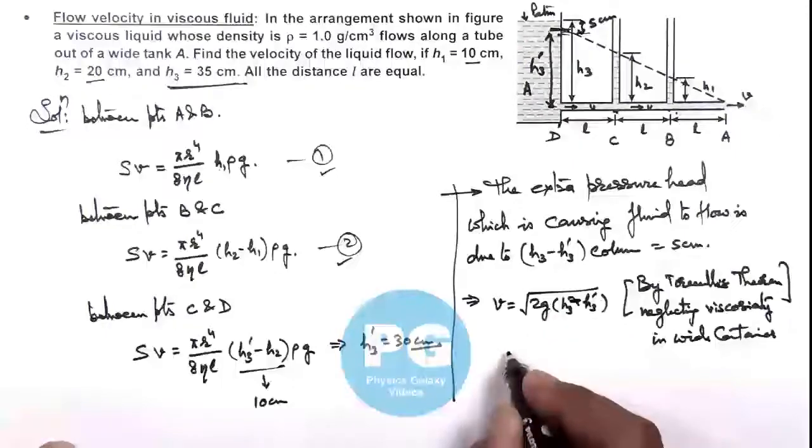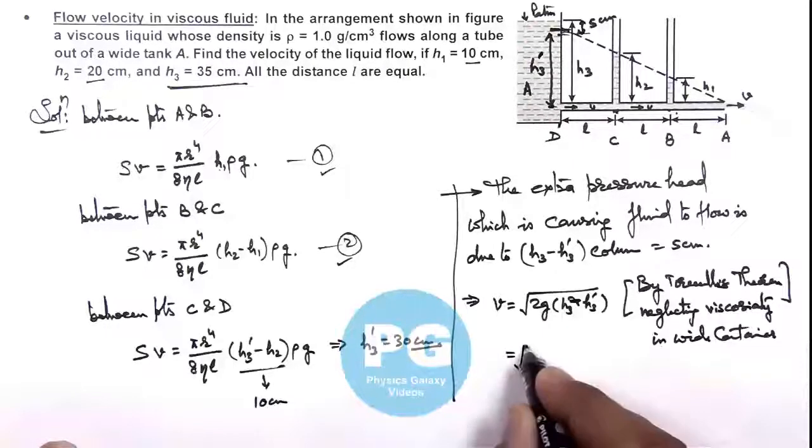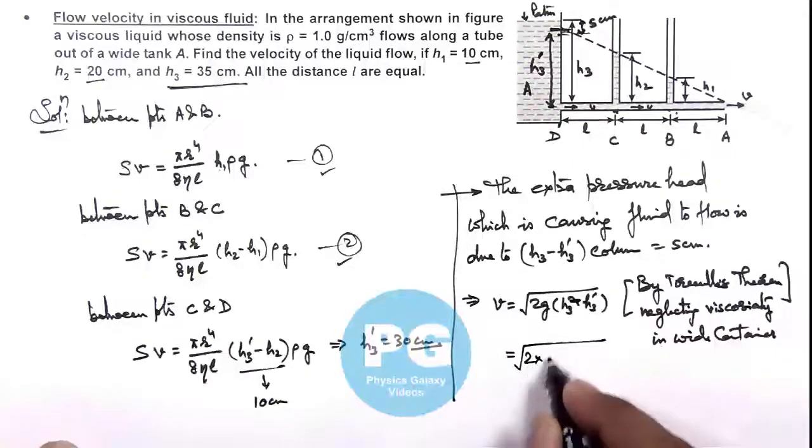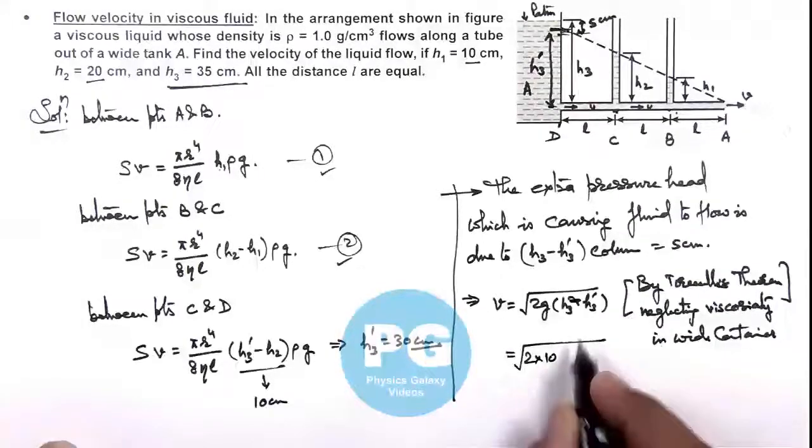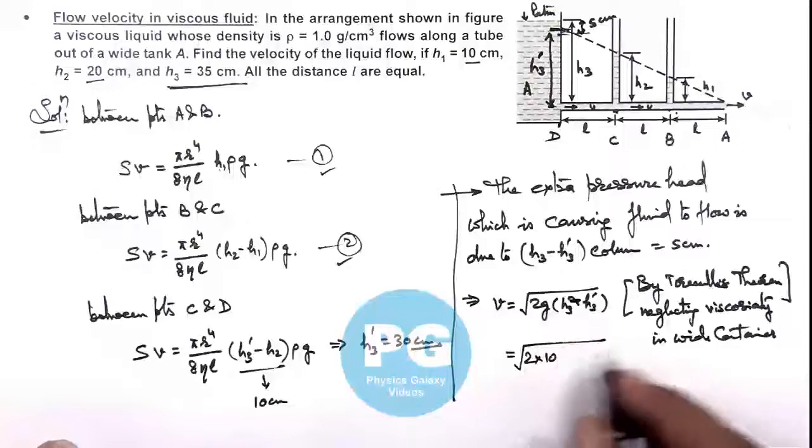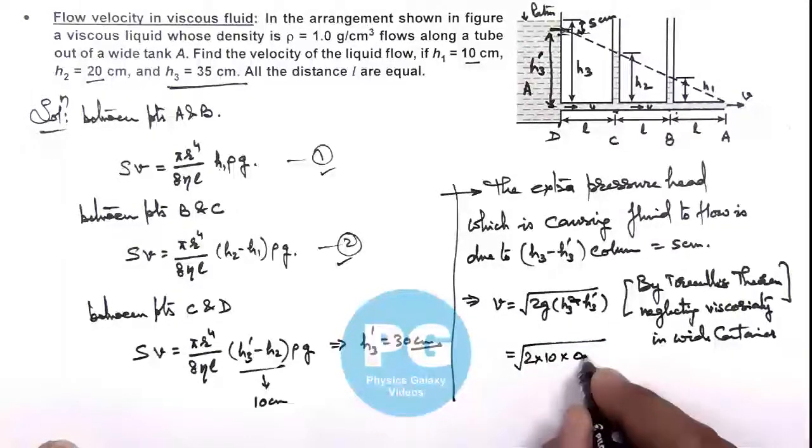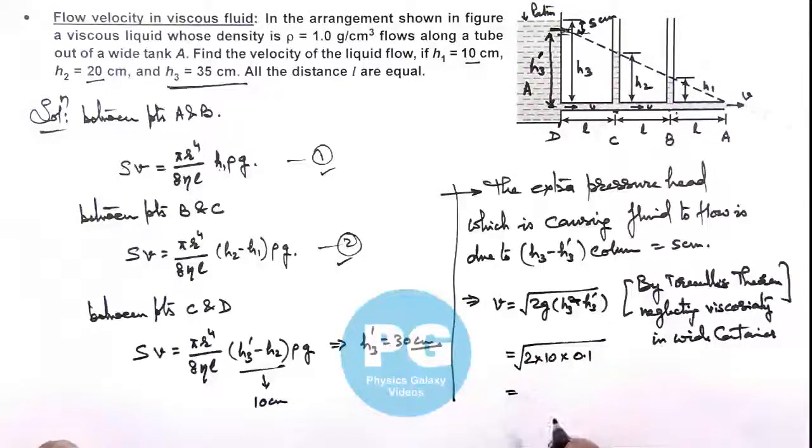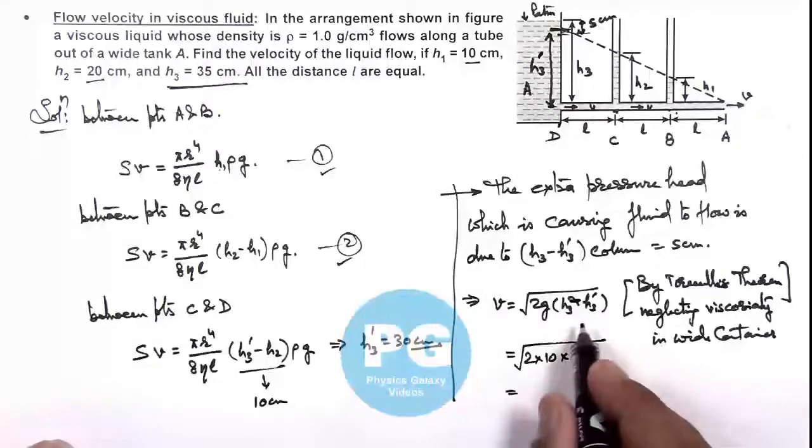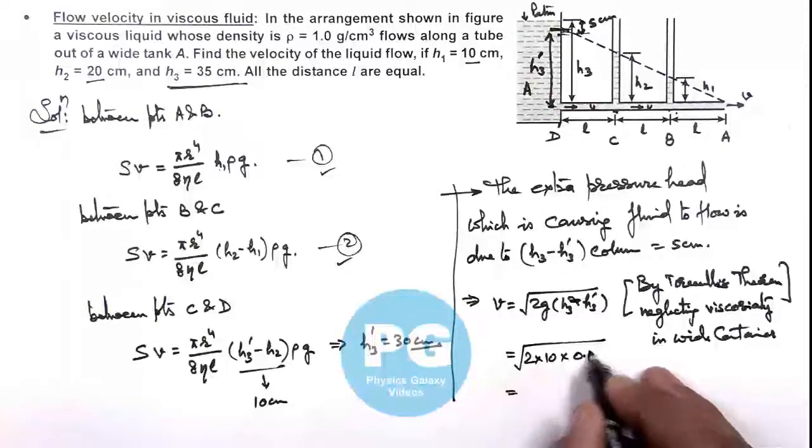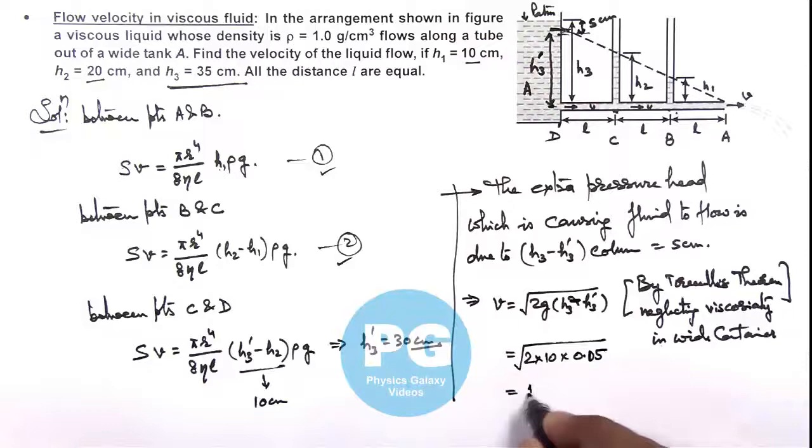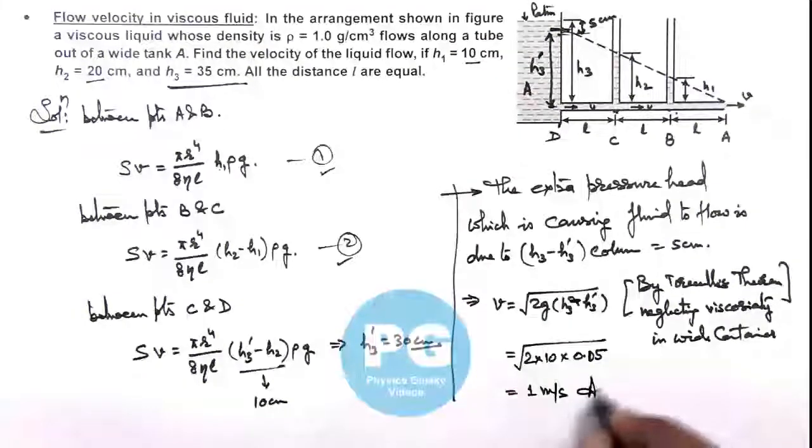On calculation we can get it √(2 × g), we can take here as 10, and h3 - h3 prime here is 0.05. So this is coming out to be one meter per second. That is the result of this problem.